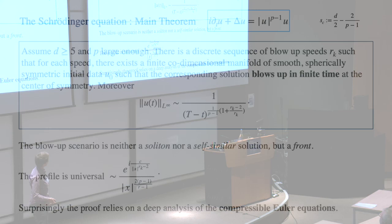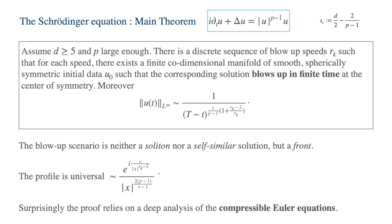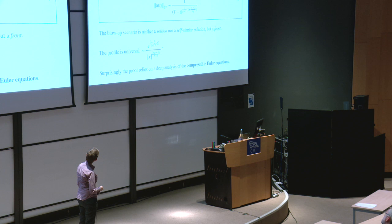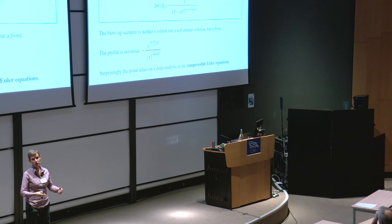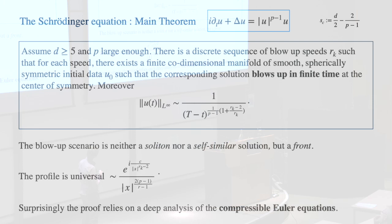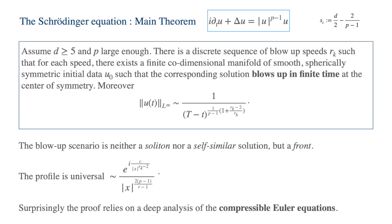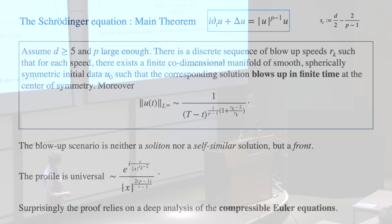What Franck, Pierre, Igor, and Jeremy proved is that there is blow-up in finite time — all norms blow up, especially the L-infinity norm. You can have a whole family of blow-up rates: those R_k sequences going to some critical blow-up rate. There is a finite co-dimensional manifold of smooth, spherically symmetric initial data giving a blow-up solution. The blow-up profile is essentially universal — spherically symmetric, blowing up at the center of symmetry with strong oscillations there. Surprisingly, to prove this result they resorted to a deep analysis of the compressible Euler equations.